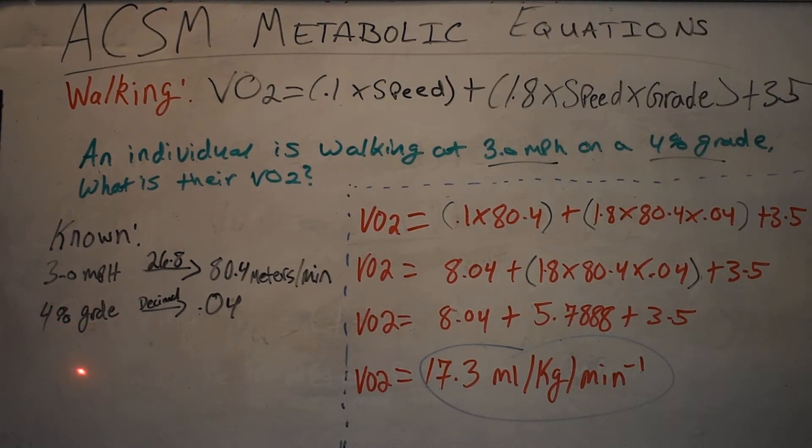What that means is this individual who's on a 4% grade, I need to divide that by 100 to get the percentage in a decimal. For example, if this was a 12% grade, the speed would be input as 0.12.